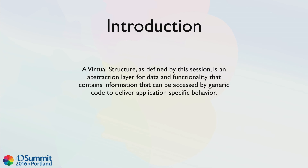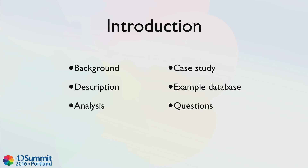A virtual structure, as defined by this session, is an abstraction layer for data and functionality that contains information that can be accessed by generic code to deliver application-specific behavior. This is a different kind of session — it's not new features in 4D. We've been doing this for a long time in different ways, and currently we're using 4D objects to store information about the virtual structure. We'll go over some background, a description, a SWOT-style analysis, a case study from the Art Institute, the example database, and hopefully some questions.